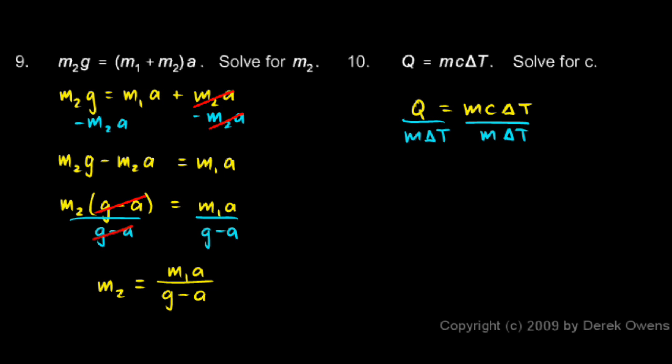And when I do that, the m's cancel out and the ΔT's cancel out, leaving me with the c all alone. So c is equal to Q over mΔT.